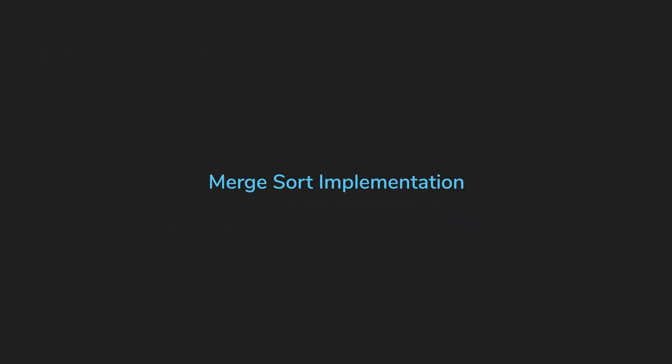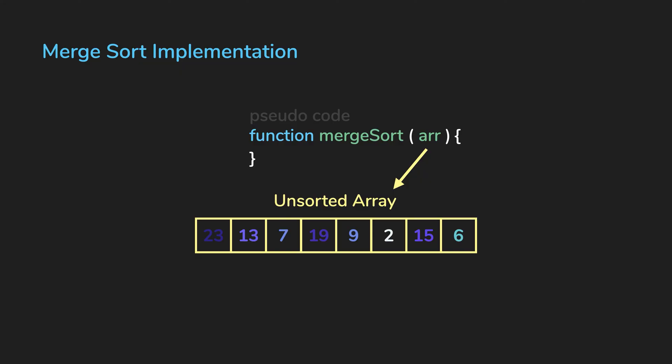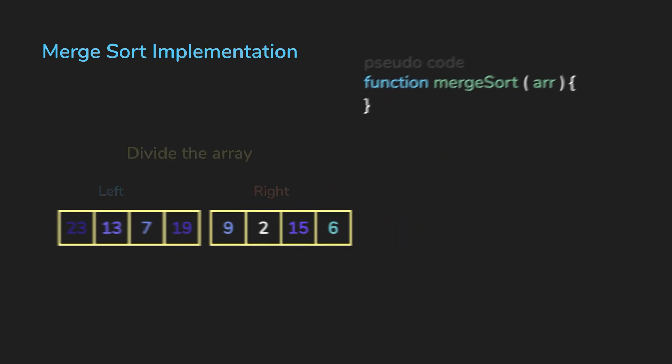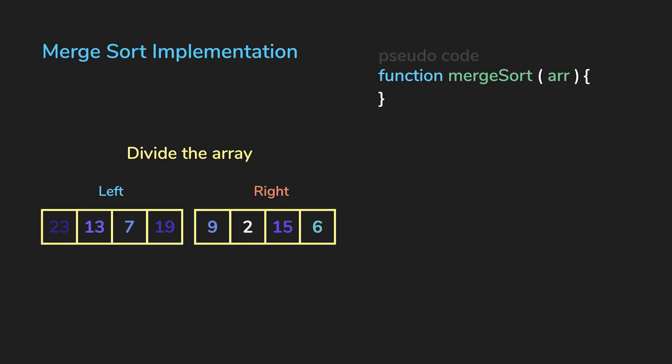So let's see how we can fully implement merge sort, so we can understand where those sorted arrays came from initially. For merge sort, you start with an unsorted array, and what we want to do first is divide the array into two. We'll call it the left part and the right part.